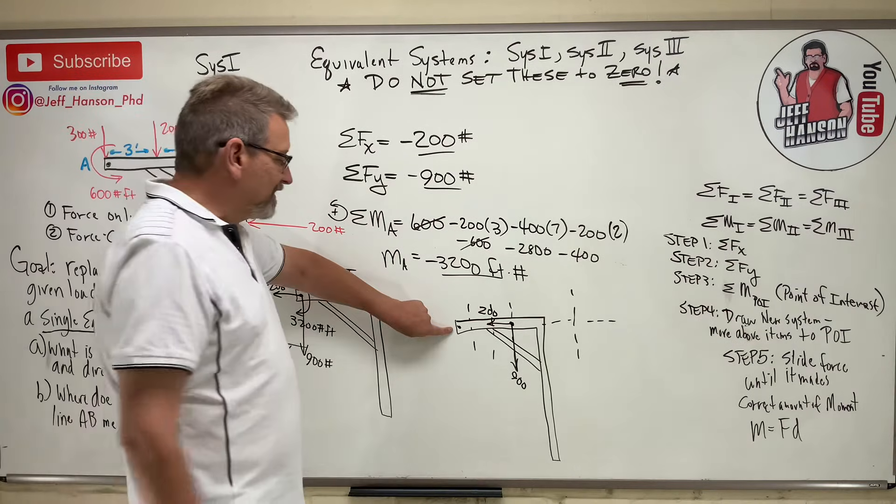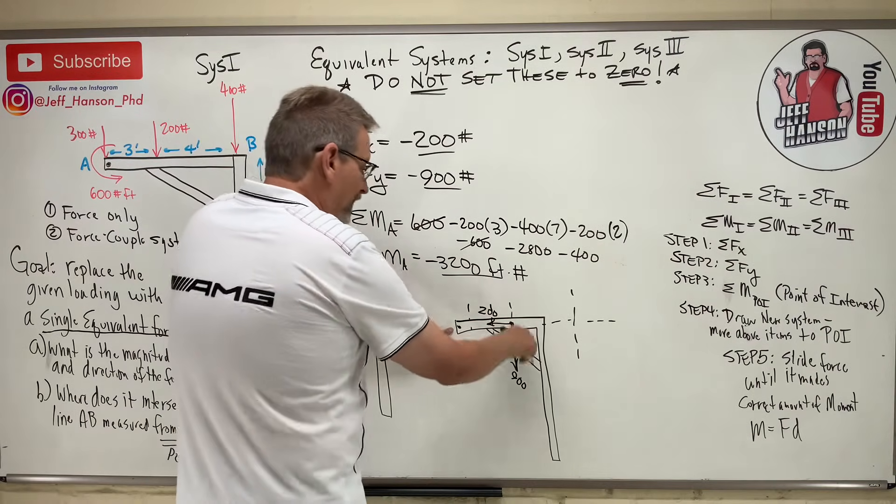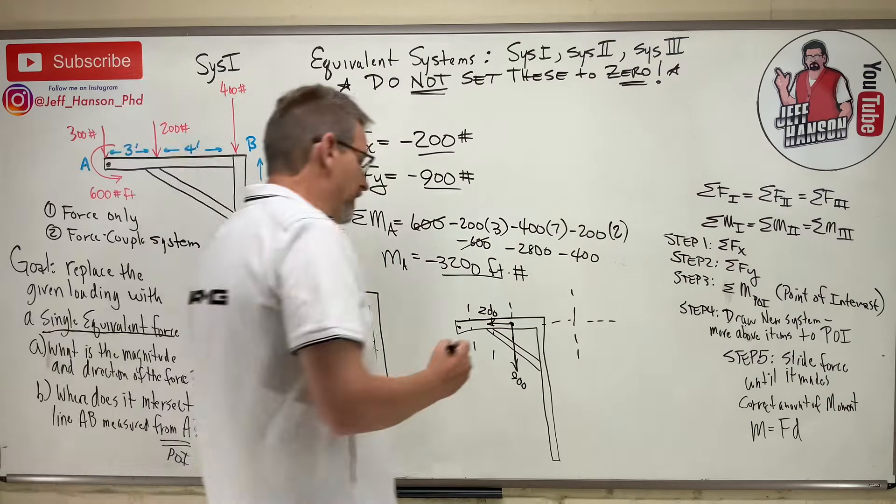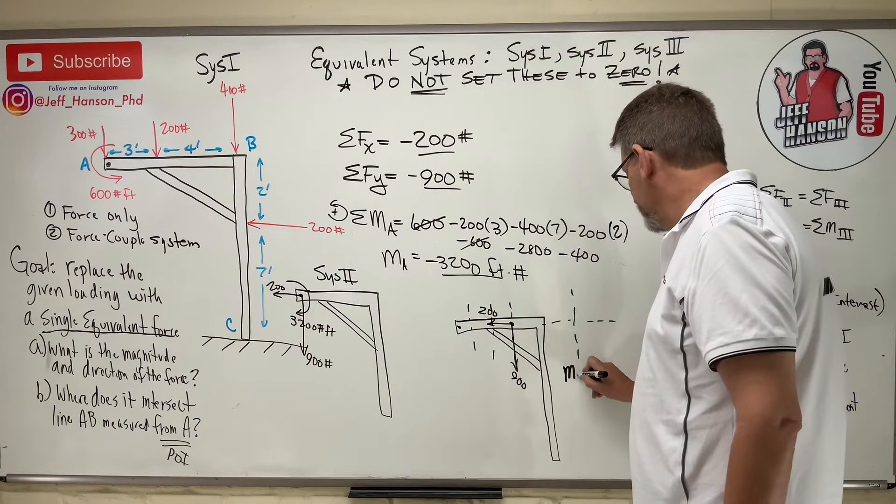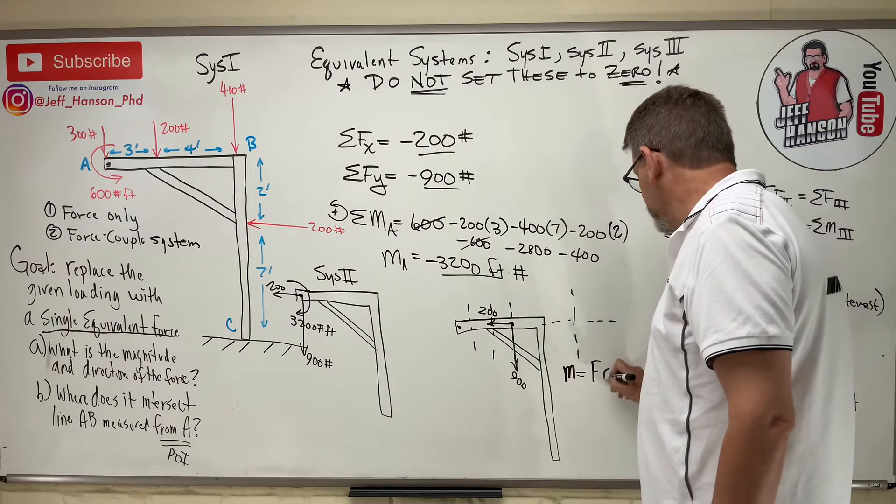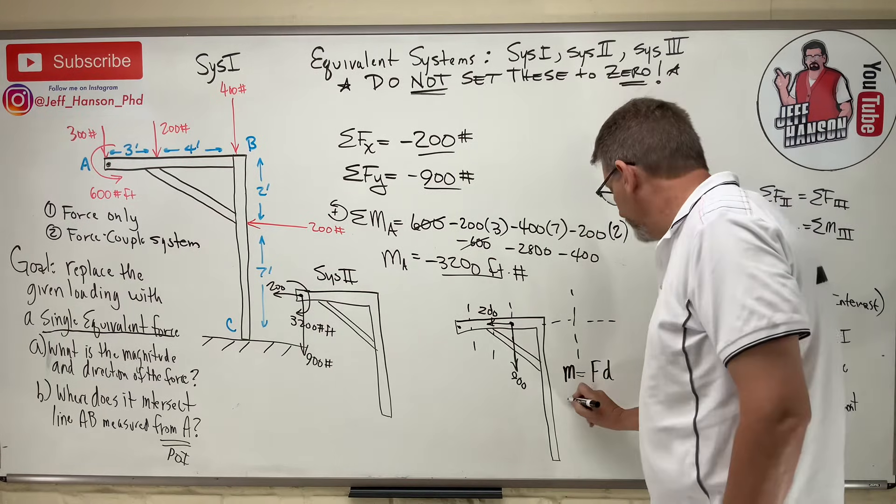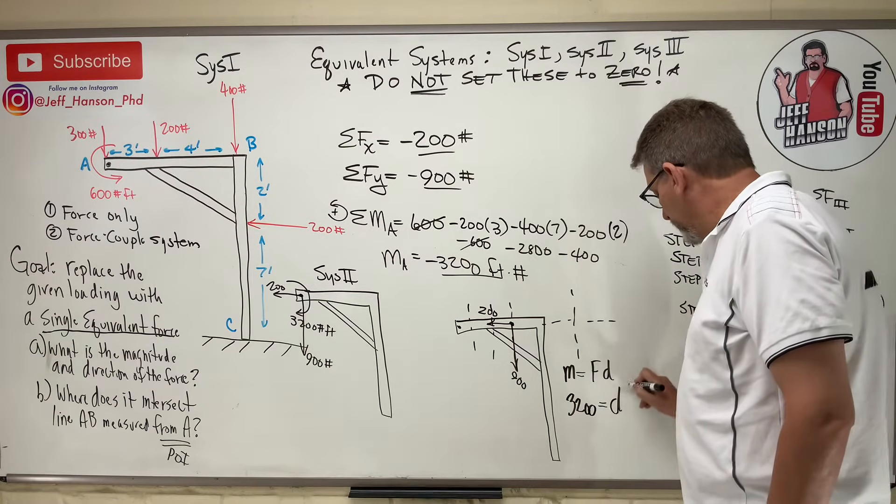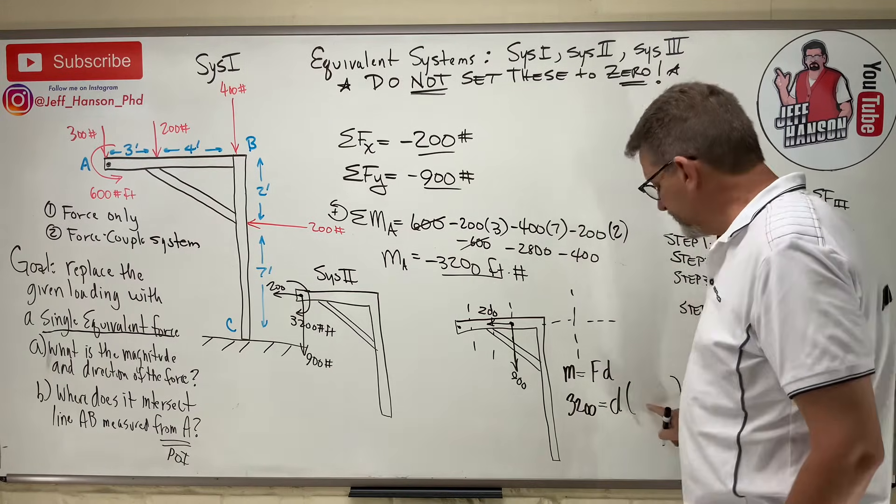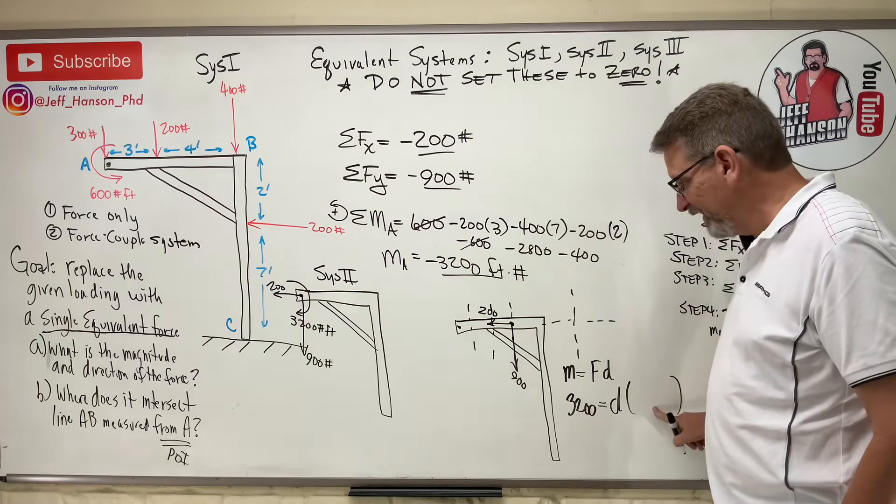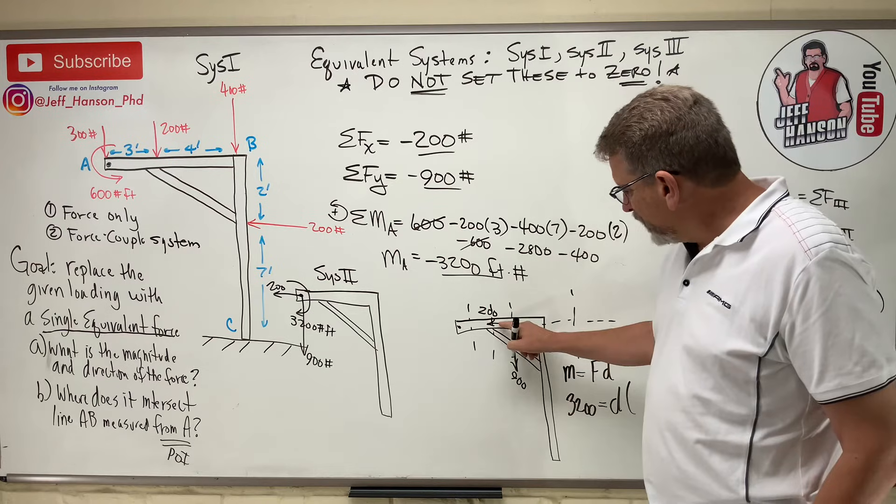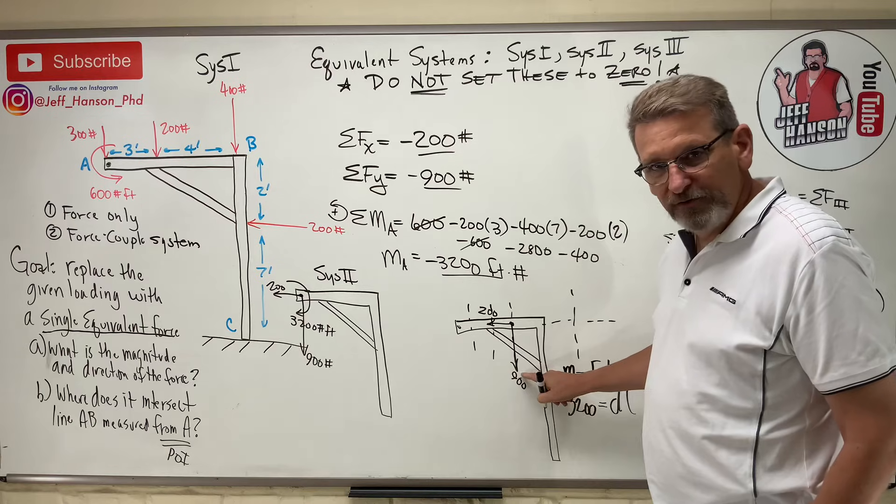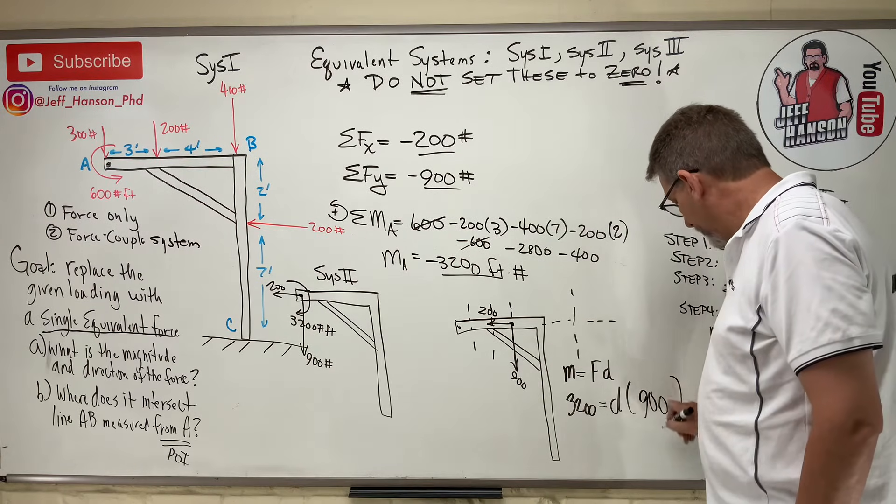The forces are 900 and 200. Now, about point A, does that 900 make a clockwise moment? It does. I needed a clockwise moment. Here's what I need. The moment is equal to the force times the distance. The moment is 3,200. And then the distance is what I'm looking for. And what is the force? What goes in there? This is usually where people mess this up.